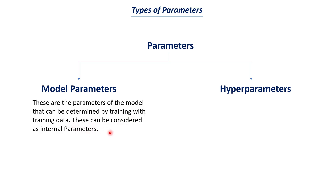In machine learning we often deal with data and we apply models — you can think about models like logistic regression, support vector machines, or K-nearest neighbor — and we feed the data to the model. What the model tries to do is find the most optimum parameters. These parameters that are determined by the model using the data are called model parameters. Once we carry out the training process, the model will try to find the best parameters. Examples of these model parameters are weights and bias.